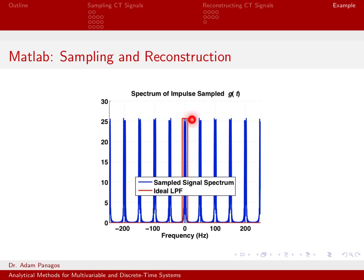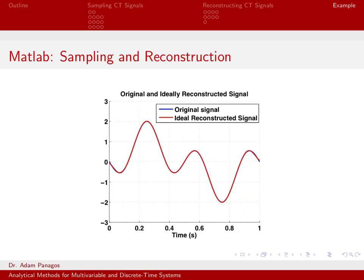So in other words, that means I would need a low-pass filter, this red line right here, that looks like this. It perfectly passes my original spectrum and perfectly rejects all of these images. To do that in MATLAB, I end up with this red curve right here. So my original signal was the blue line, which you can almost see here at the edges.